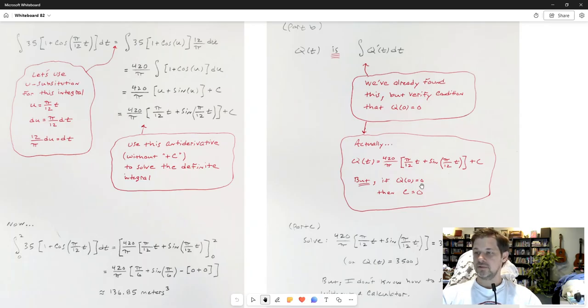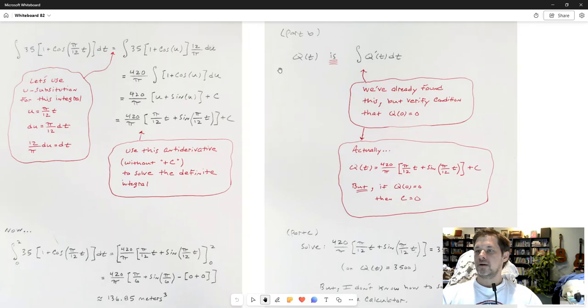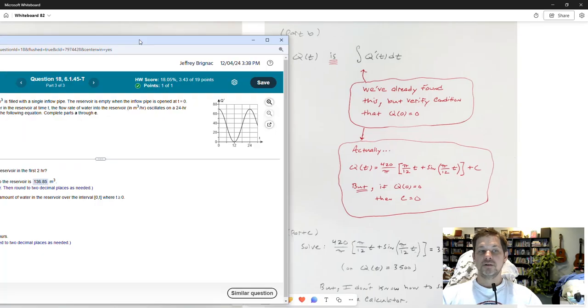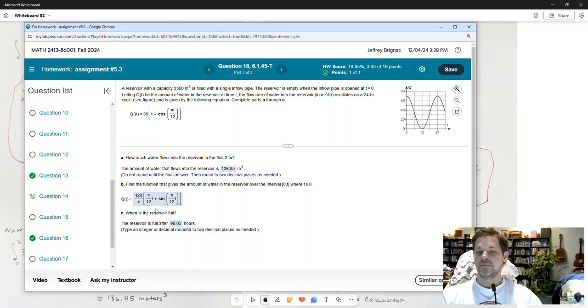Yes, q(t) is actually this with the plus c. But if q(0) is 0, meaning when I put 0 for t into this, this whole thing, including that plus c, it has to give me 0 as a result. If I then solve for c, it says c equals 0. So there you have it. q(t) is just that antiderivative that I got and used in part A.